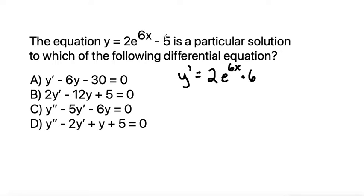And then we can take the derivative of negative 5, the derivative of any constant goes to 0. So simplifying just a bit, the derivative of y is equal to 12e to the 6x.